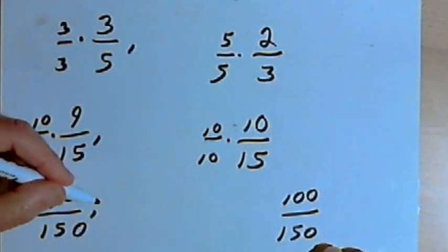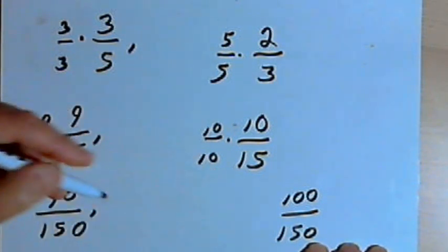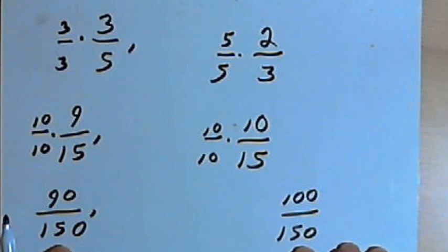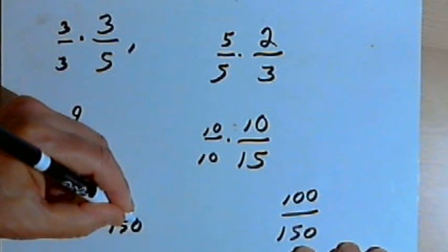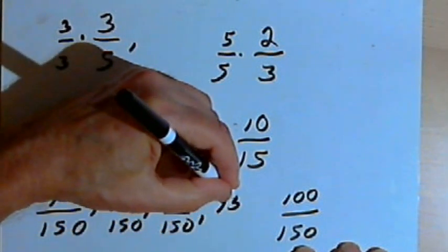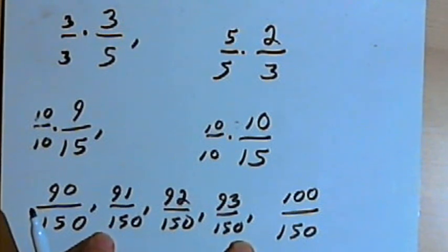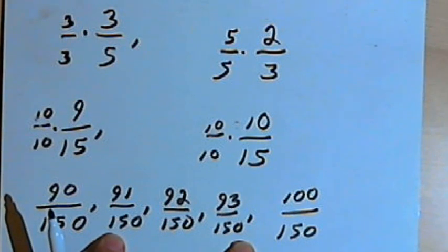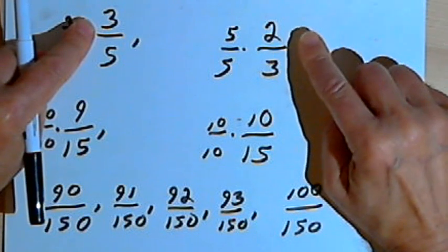And now there are 9 fractions, at least, that I can fit in between these two, and they'll all even have the same denominator, 150. I can put in 91 over 150, 92 over 150, 93 over 150, I could put in more if I needed to. So these three fractions in the middle are all going to be fractions or rational numbers that are between my two original fractions, 3 over 5 and 2 over 3.